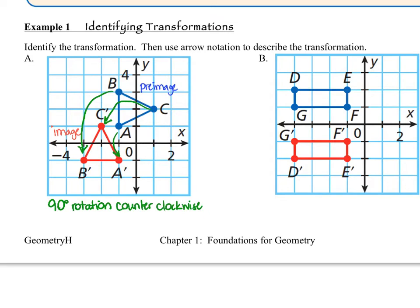Last of all, we need to create the mapping statement, and that is going to be triangle ABC, which is our pre-image triangle, maps to, and that's what the little arrow says, triangle A prime, B prime, C prime.